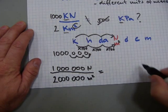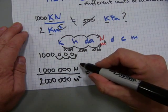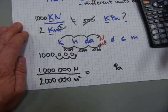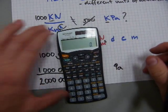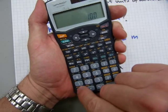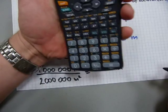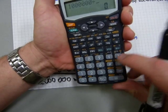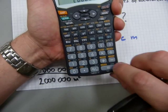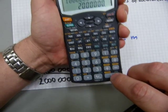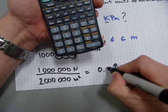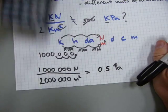Now we can do the division to get base unit divided by base unit to get another base unit, Pascal. Now let's use calculator. So one million newtons divided by two million square meters. There. Equals 0.5 Pascal.